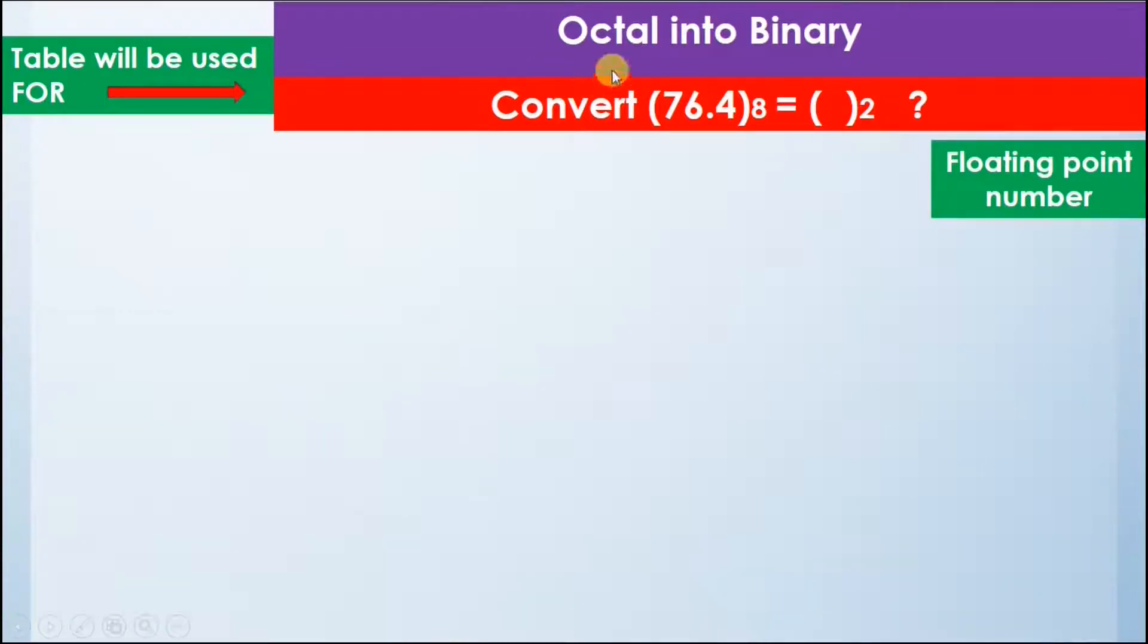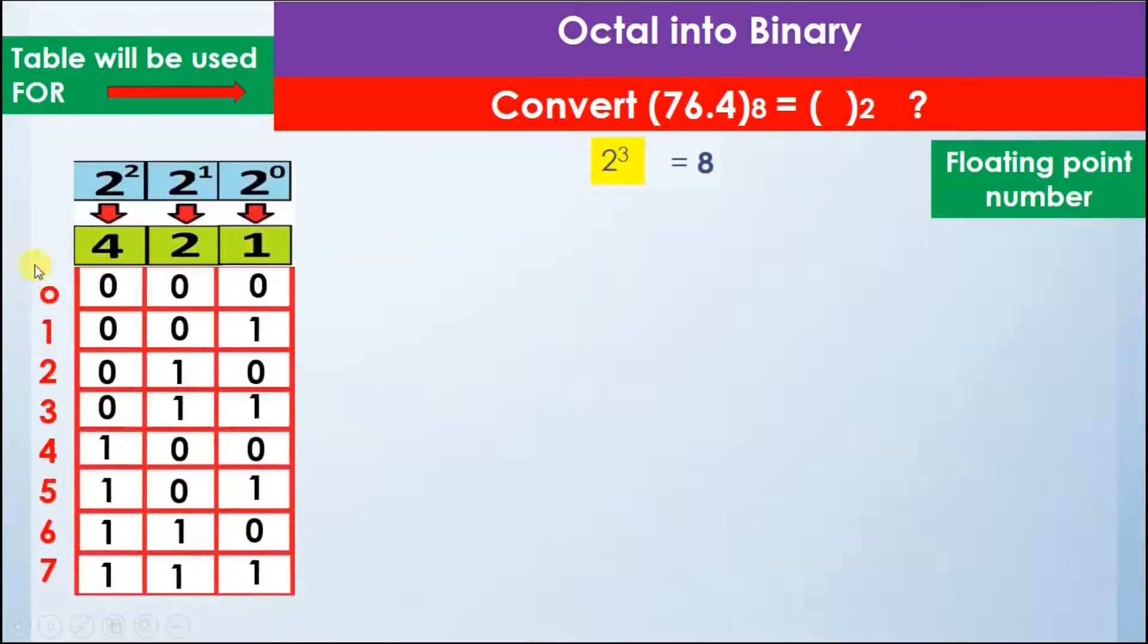Now we will convert an octal number into binary using a floating point number. The floating point number we are given is 76.4 in octal and we have to convert it into binary. We know that 2 raised to power 3 equals 8, so we will use the table that shows octal numbers from 0 to 7 and their binary equivalents.